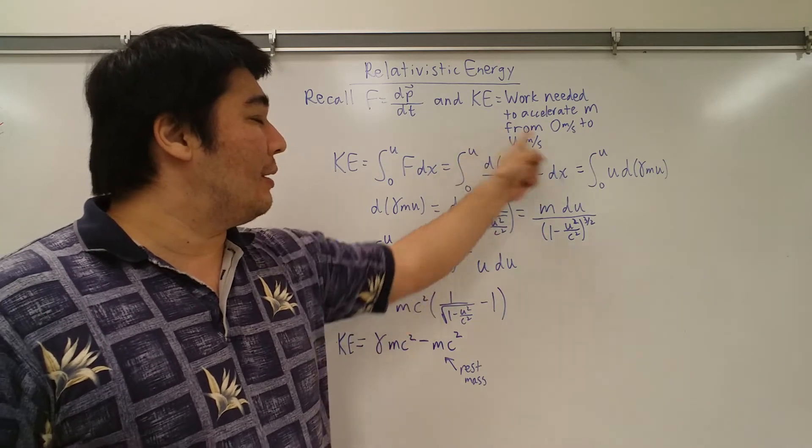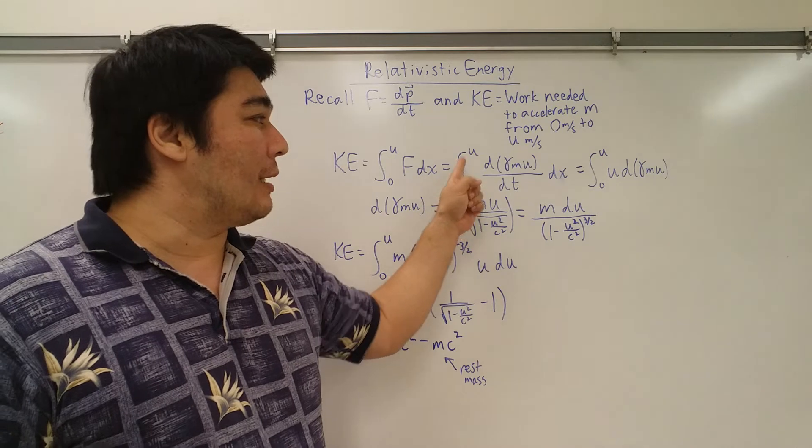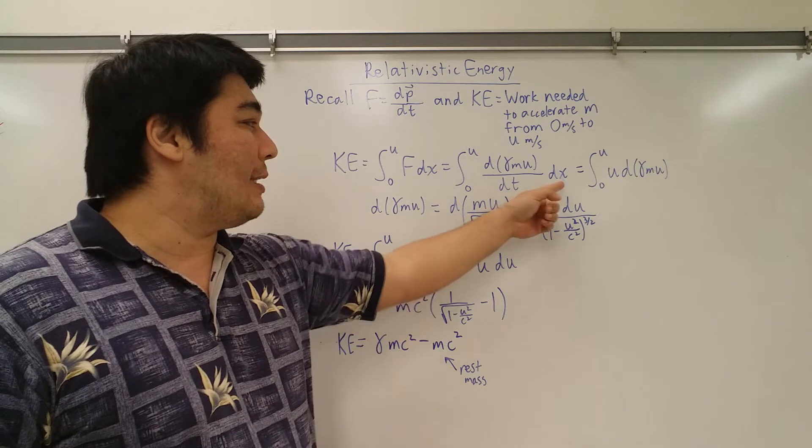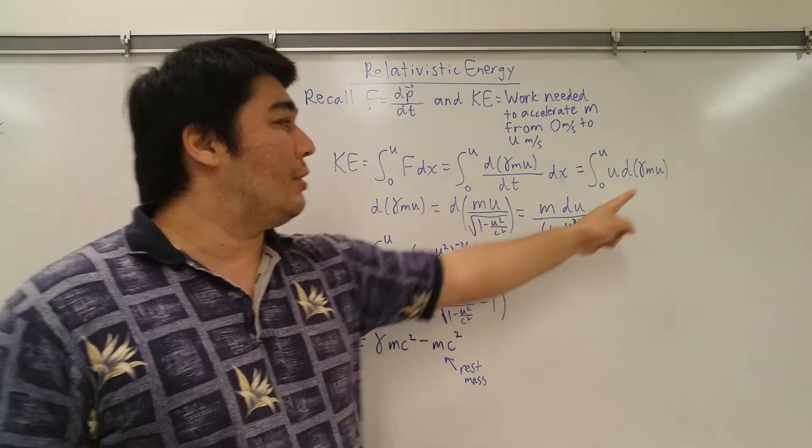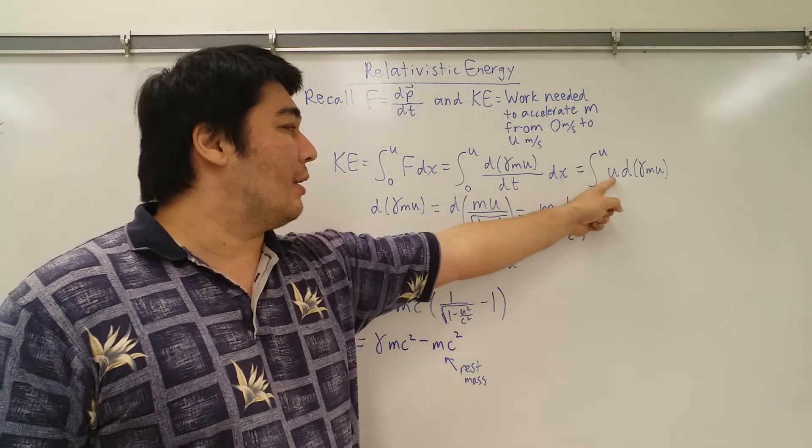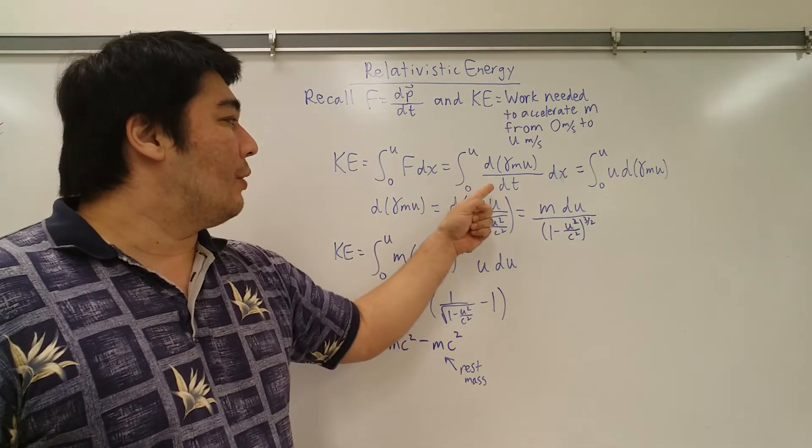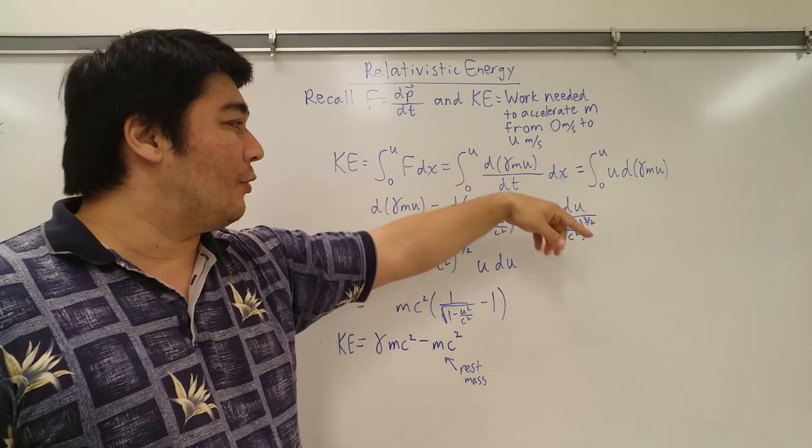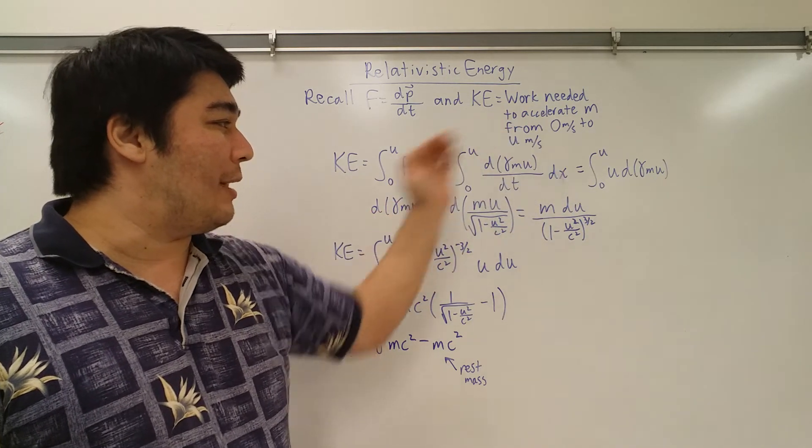So now what I'm doing here is using my u substitution toolbox. So that's why my dx/dt gets changed to just a du. So I've got u times the differential of gamma mu.